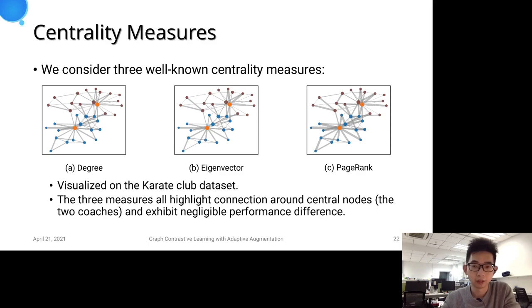And in this work, we consider three widely used centrality measures: the degree, the eigenvector, and the PageRank centrality. Here we visualize the obtained edge removal probability on the karate club dataset.